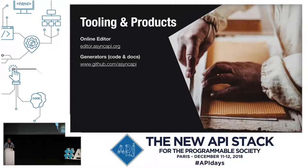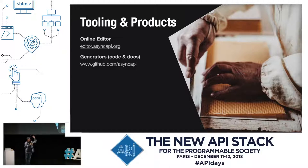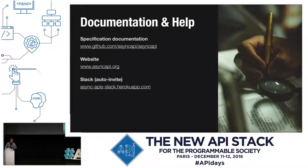So how to get started? The editor that I was using in the demonstration is at editor.asyncapi.org. If you want to find some code generators and documentation generators afterwards, you can go to the GitHub organization. More info can be read on the website, and you also have a Slack auto-invite there in case you want to join the Slack channel. I will share the slides afterwards.